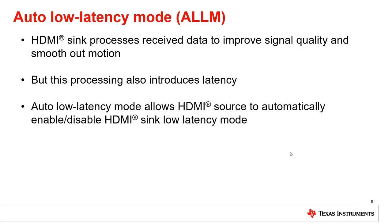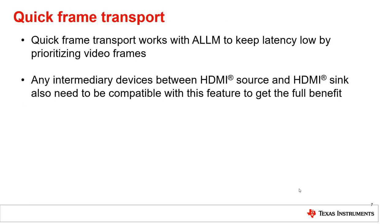An HDMI sync process receives data to improve signal quality and smooth out motion, but this processing increases the latency of the data transfer. HDMI 2.1 includes a few latency-efficient features. The first is Auto Low Latency Mode, or ALLM, which allows the HDMI source to automatically enable or disable the HDMI sync low latency mode. Another latency-efficient feature is Quick Frame Transport, which works with ALLM to keep latency low by prioritizing video frames, therefore delivering a more responsive video viewing experience for the end user.